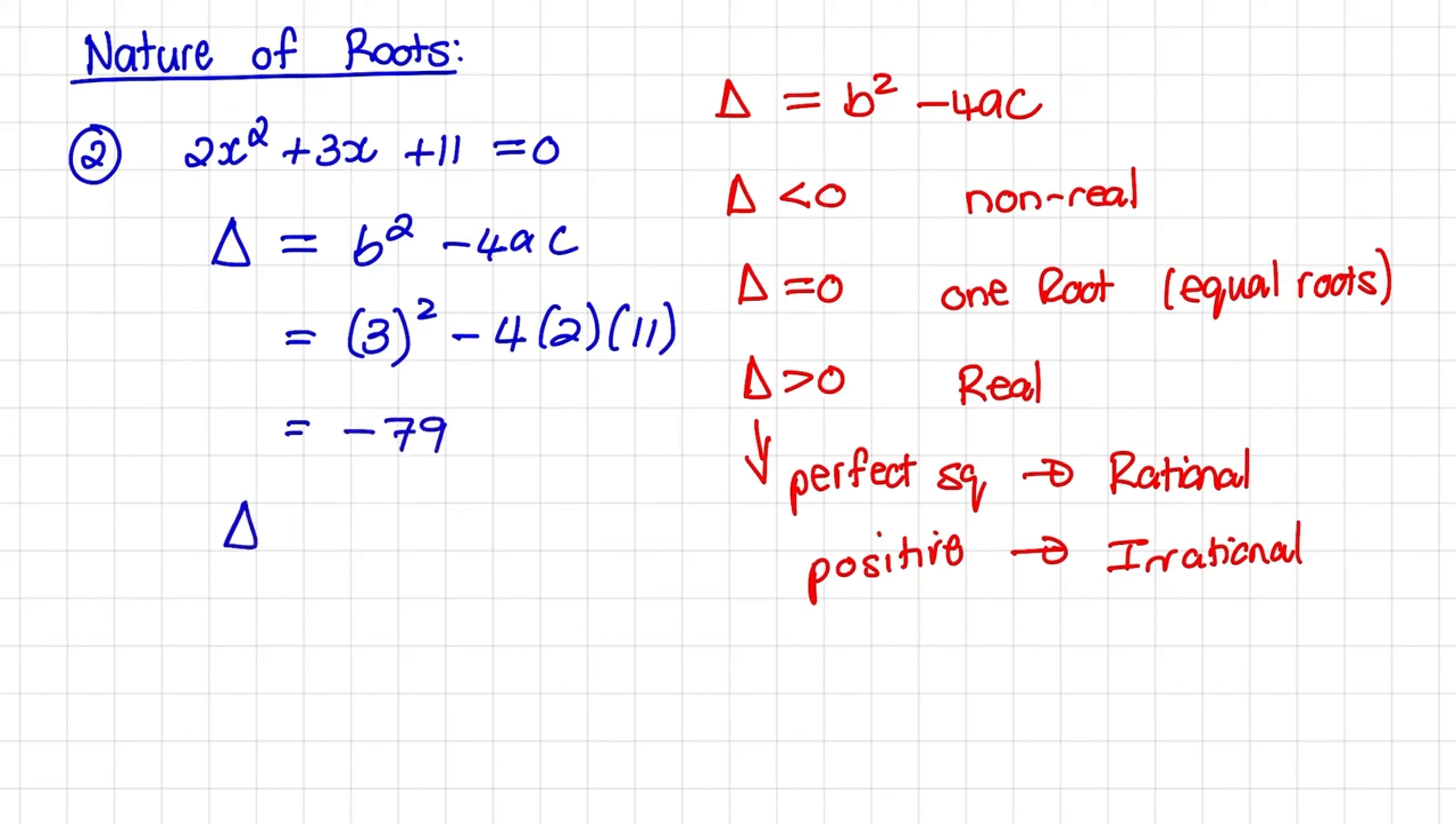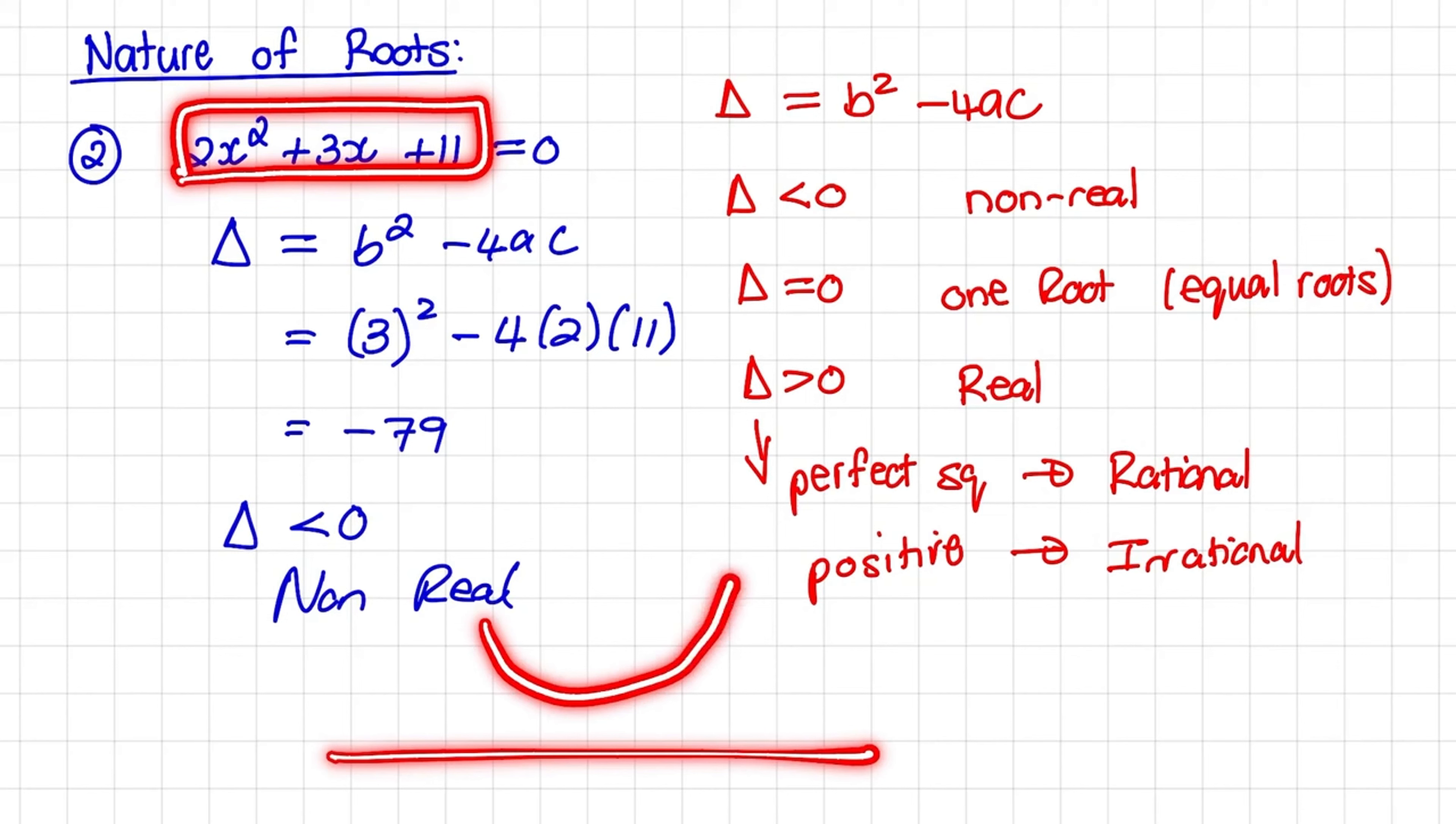So the discriminant is negative. Therefore, the roots are non-real. What this means is, if we plot this expression as a parabola, it will not intersect with the x-axis. So the roots do not exist on the x-axis.